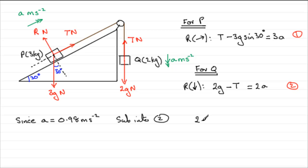If we sub this into 2 we've got that 2 times g minus t equals 2a, 2 times 0.98. And if we rearrange this for t, t will equal 2g minus 2 times 0.98.